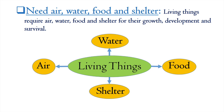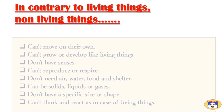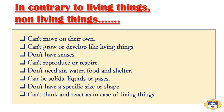So this is about the characteristics of living things. In contrast to living things, non-living things can't move on their own, can't grow or develop like living things, don't have senses, can't reproduce or respire, and don't need air, water, food, or shelter. They can be solids, liquids, or gases, don't have a specific size or shape, and can't think and react as in the case of living things.